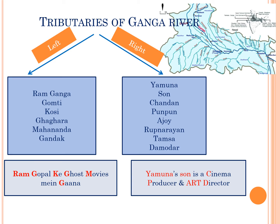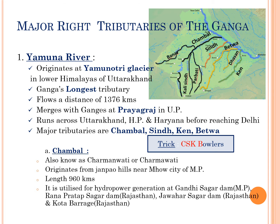The right tributaries of Ganga river are Yamuna, Son, Chandan, Ponpan, Ajoy, Roop Narayan, Tamsa, and Damodar rivers. The trick to remember the right tributaries is 'Yamuna's son is a cinema producer and also an art director.' Out of 8 right tributaries of Ganga, we will discuss 3 major right tributaries: Yamuna river, Son river, and Damodar river.